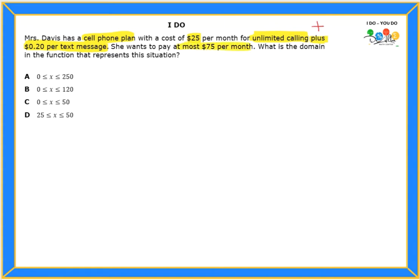So, let's analyze that. What does it mean by at most? Well, it means that she's okay to pay $25. She's willing to pay $75, but she doesn't want to go above $75. So, there is an inequality that we can use for that. She wants to pay less than or equals to $75.